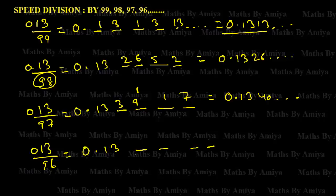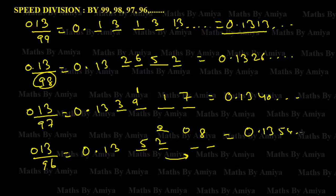For 13 divided by 96: the extra digit is 0.13, and the gap is 4. Multiply by 4: 13 × 4 = 52, then 52 × 4 = 208 — write 08 and carry 2. So our first four digits are 0.1354... (52 + 2 = 54). We just need to write the numbers and continue.